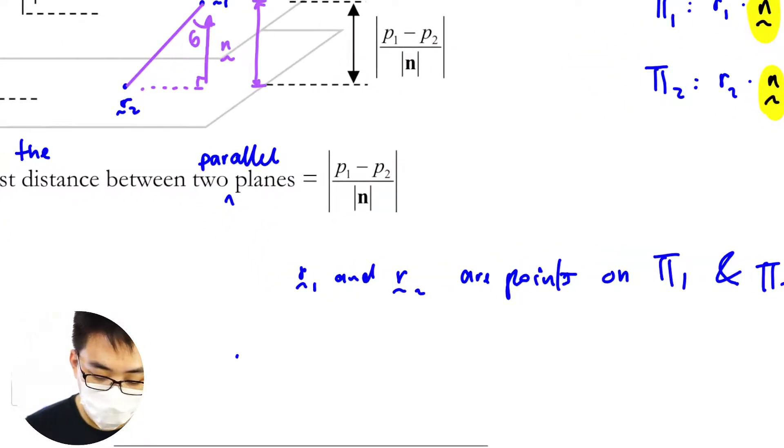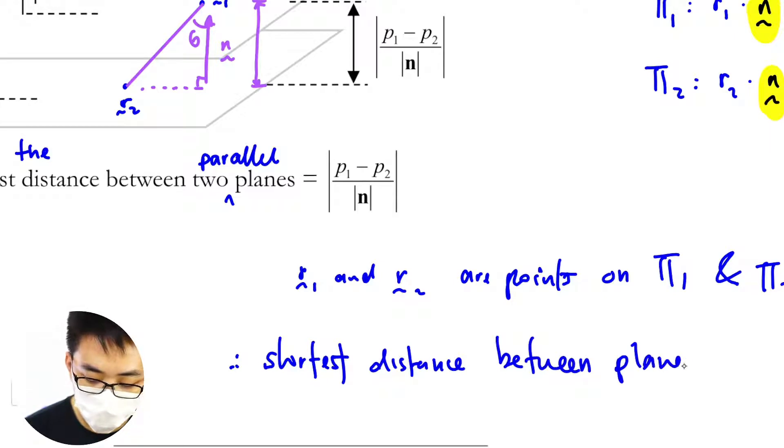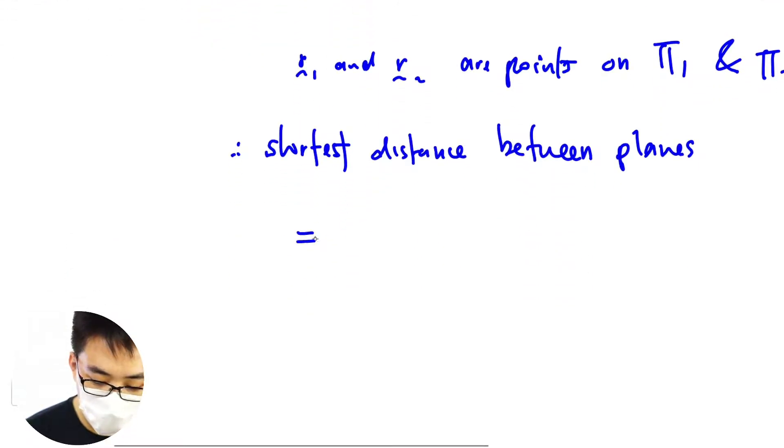So hence shortest distance between planes then be r₂ over dot